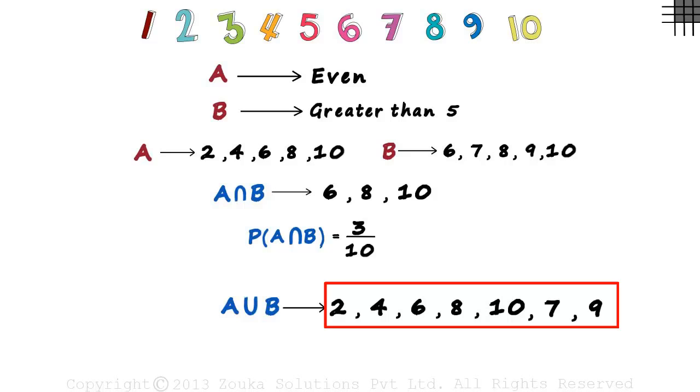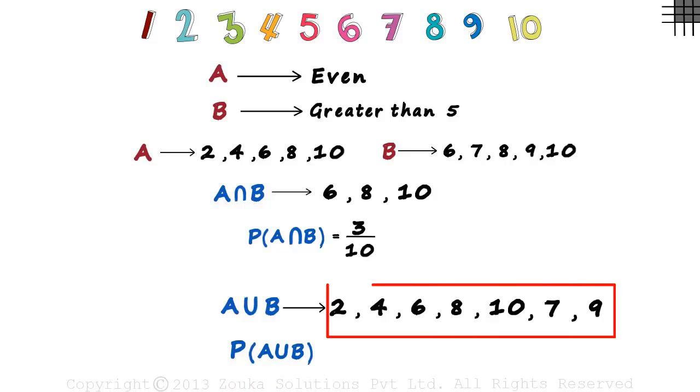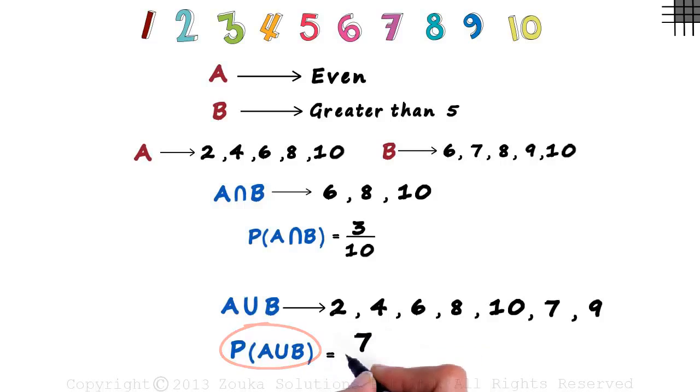No matter what number we pick from this set, it will surely be either even or greater than five, or it is possible that our pick is both even and greater than five. What we are interested in is probability of A or B. There are seven numbers here out of a possible ten. So the probability of A or B happening is seven divided by ten.